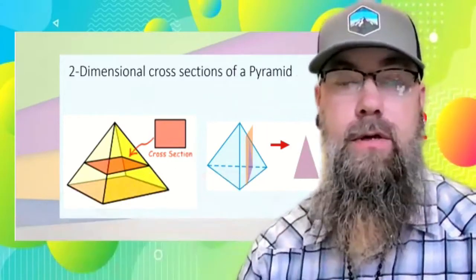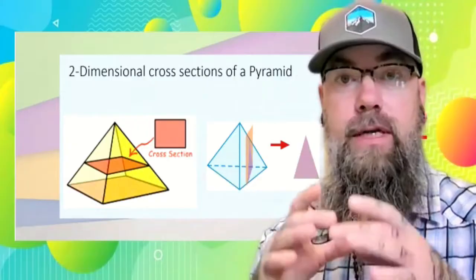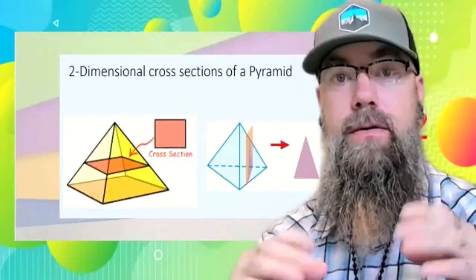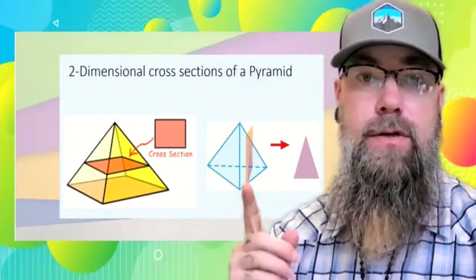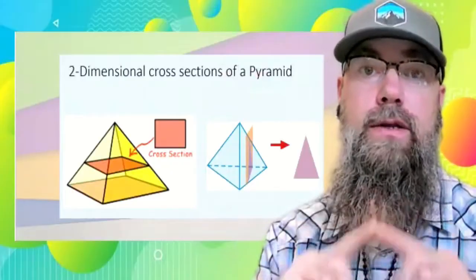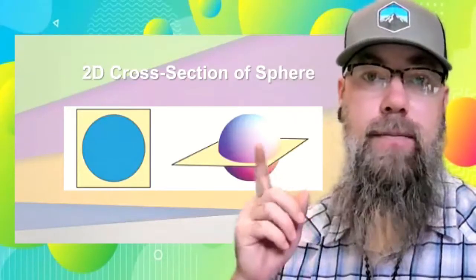If we take a horizontal cross section of that 3D shape, we'll either get a square or a rectangle. If we take a vertical cross section of this pyramid, then we will get a triangle.